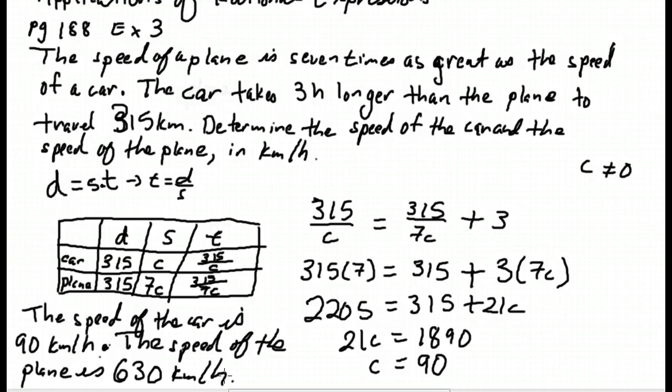How do we check this? The way I check a word problem is I take these numbers and I go back to the original description. The speed of a plane is 7 times as great as the speed of a car. 90, 630, check. The car takes 3 hours longer than the plane to travel 315 kilometers. The plane at 630 kilometers an hour is going to take, to travel 315, a half of an hour. Time is distance over speed. 630 over 315 is 0.5. 315 divided by 90 is 3.5. So that'll be three and a half hours. Three and a half hours as compared to a half hour, the car does take three hours longer than the plane to travel that distance.